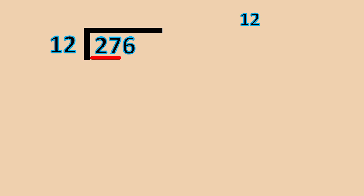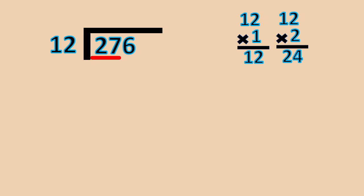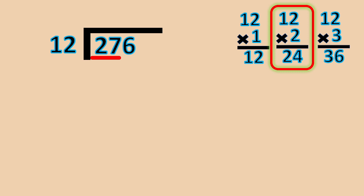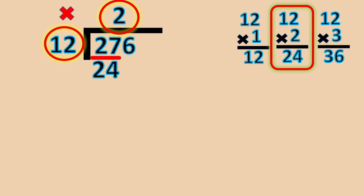Now, how many 12s will it take to get to 27? We need to take the number that is closest to 27 without going over. Let's try: 12 times 1 is equal to 12; 12 times 2 is equal to 24; 12 times 3 is equal to 36 — pretty close, but we went over. So we will use 12 times 2 is equal to 24. We write the 2 above the 7. Subtract: 27 minus 24 is equal to 3.